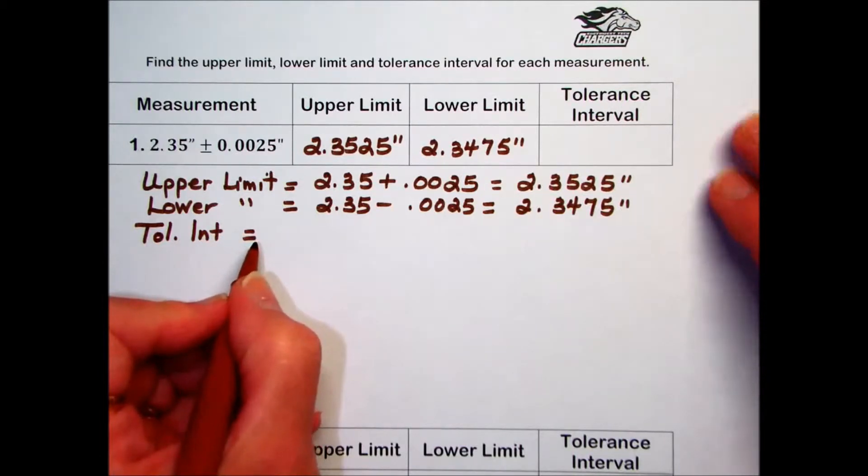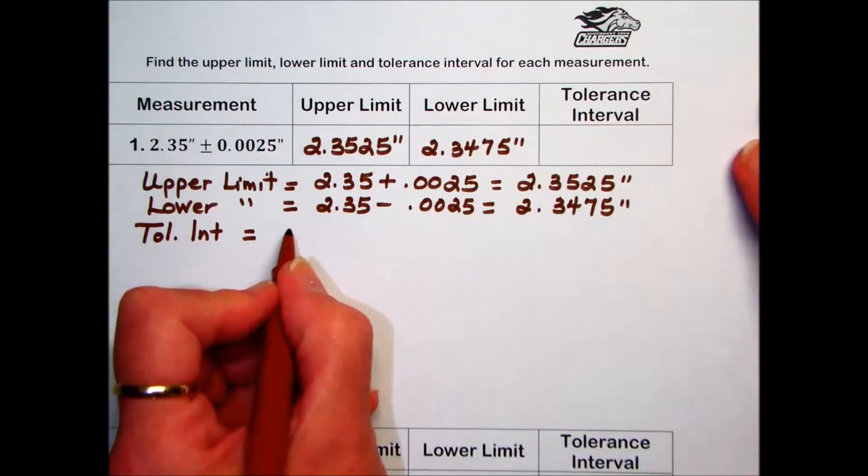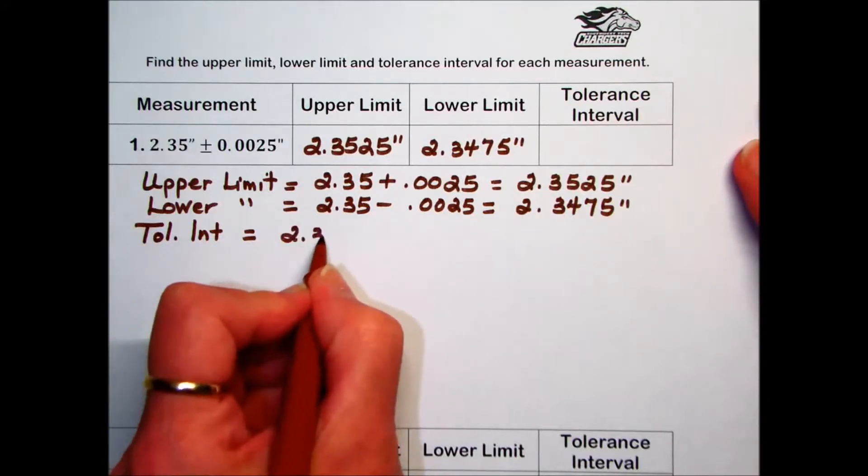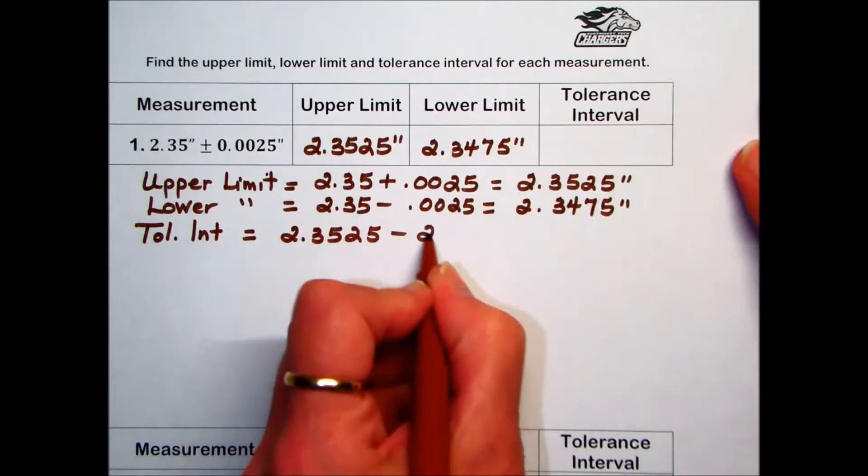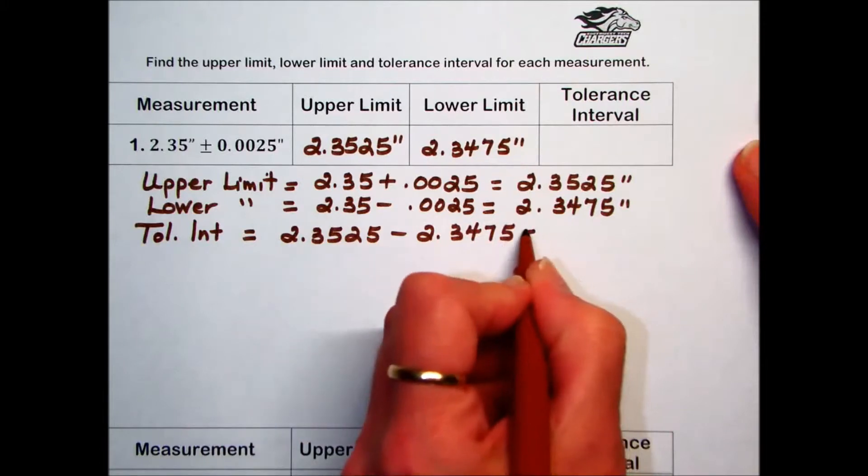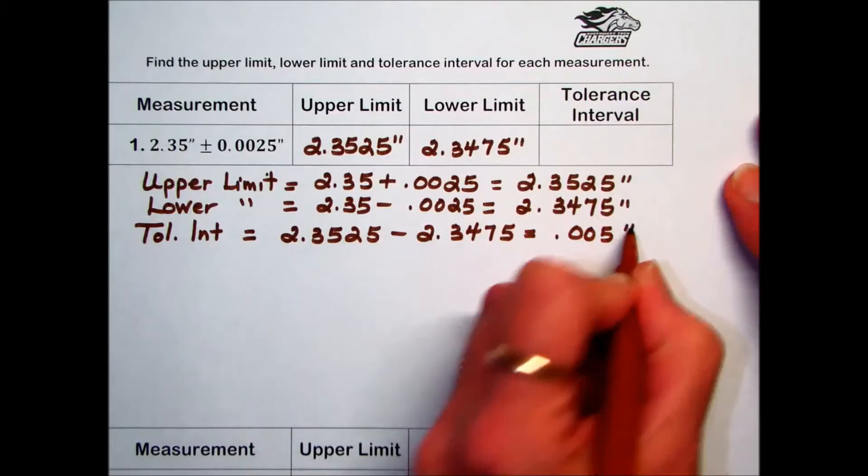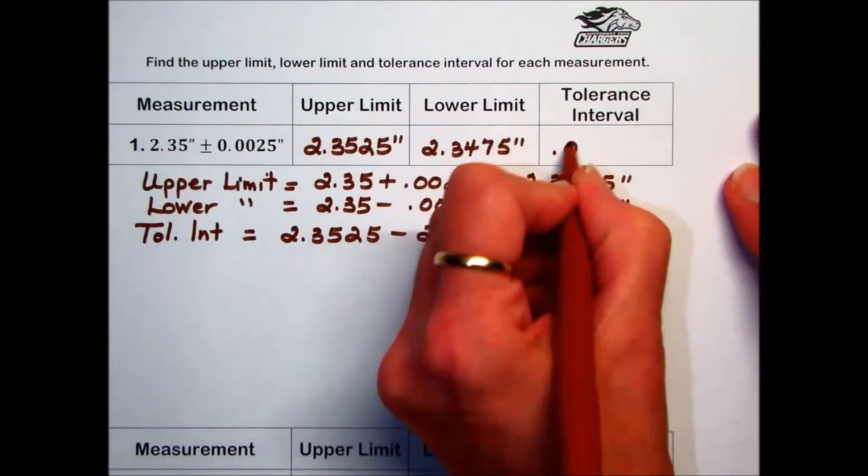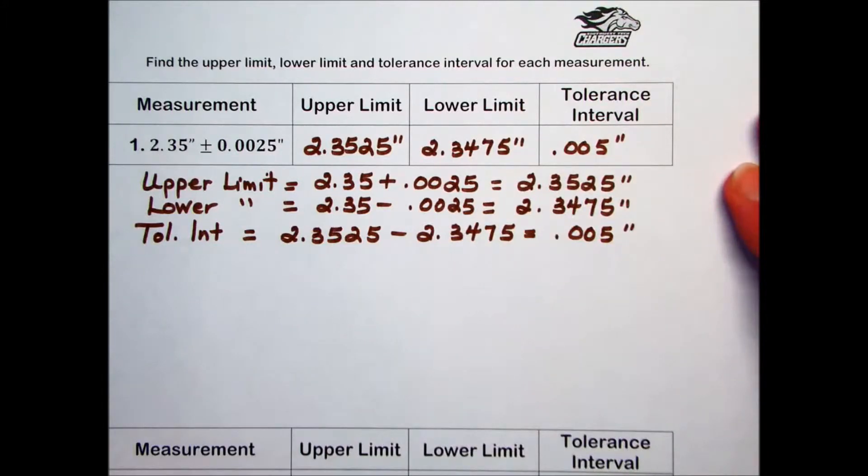we subtract the lower limit from the upper limit. So for this particular problem, we will take 2.3525 and subtract 2.3475 from it, giving us a value of 0.005 inches.